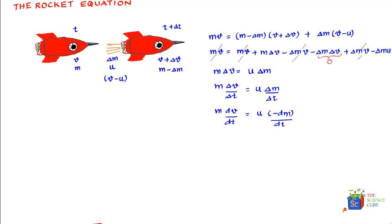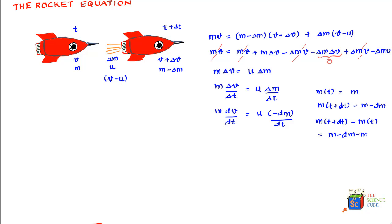Now, you might ask why we take minus dm. The answer is that if the mass of the rocket at time t was m, then the mass of the rocket at time t plus dt is equal to m minus dm, because the mass is reducing — the fuel is burning, so the mass of the rocket is reducing. If you take the mass at t plus delta t minus mass at time t, what you get is (m minus dm) minus m, which gives minus dm. So when converting to differential form, your delta m converts into minus dm.